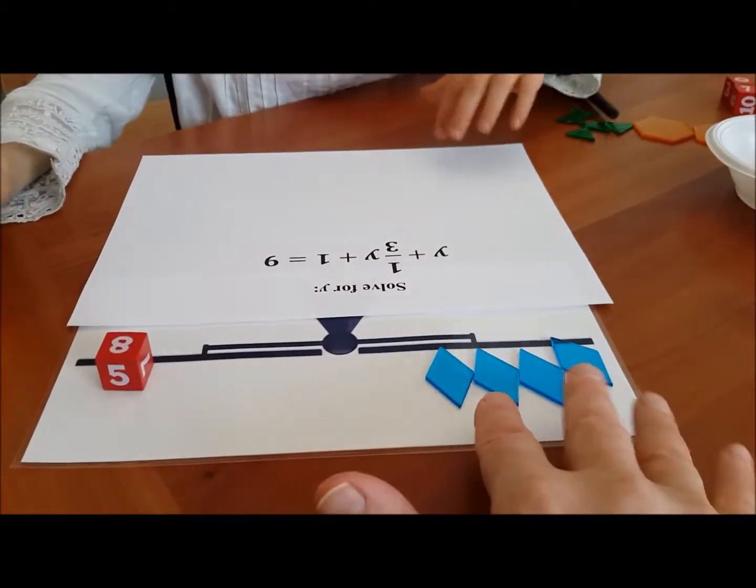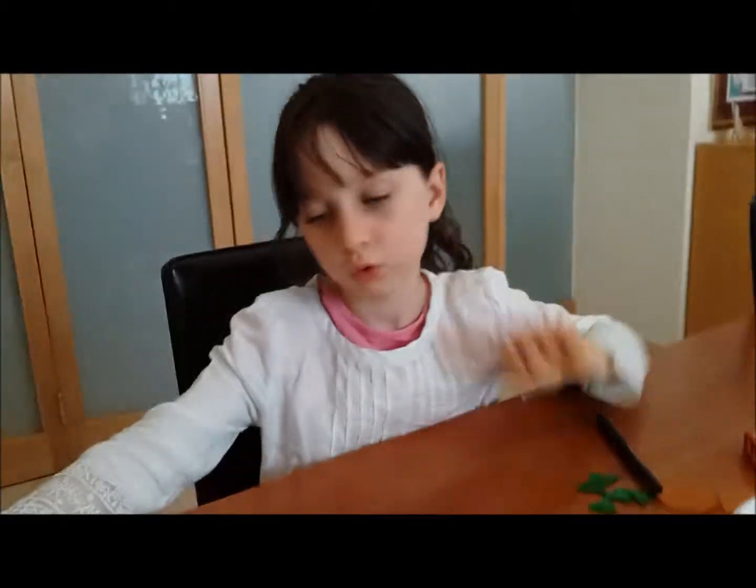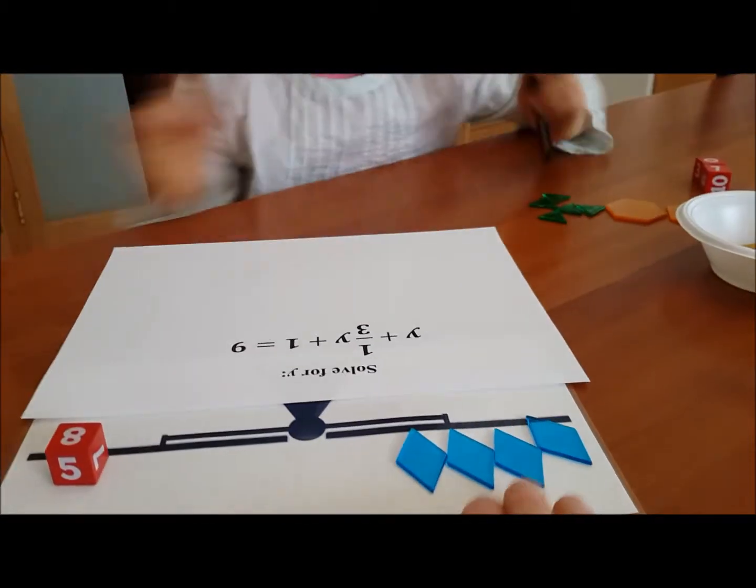Okay, now you end up with four blue blocks worth eight. So how much is each blue block? Two. Now, do you know another name for the blue block? Yeah, a third of y.